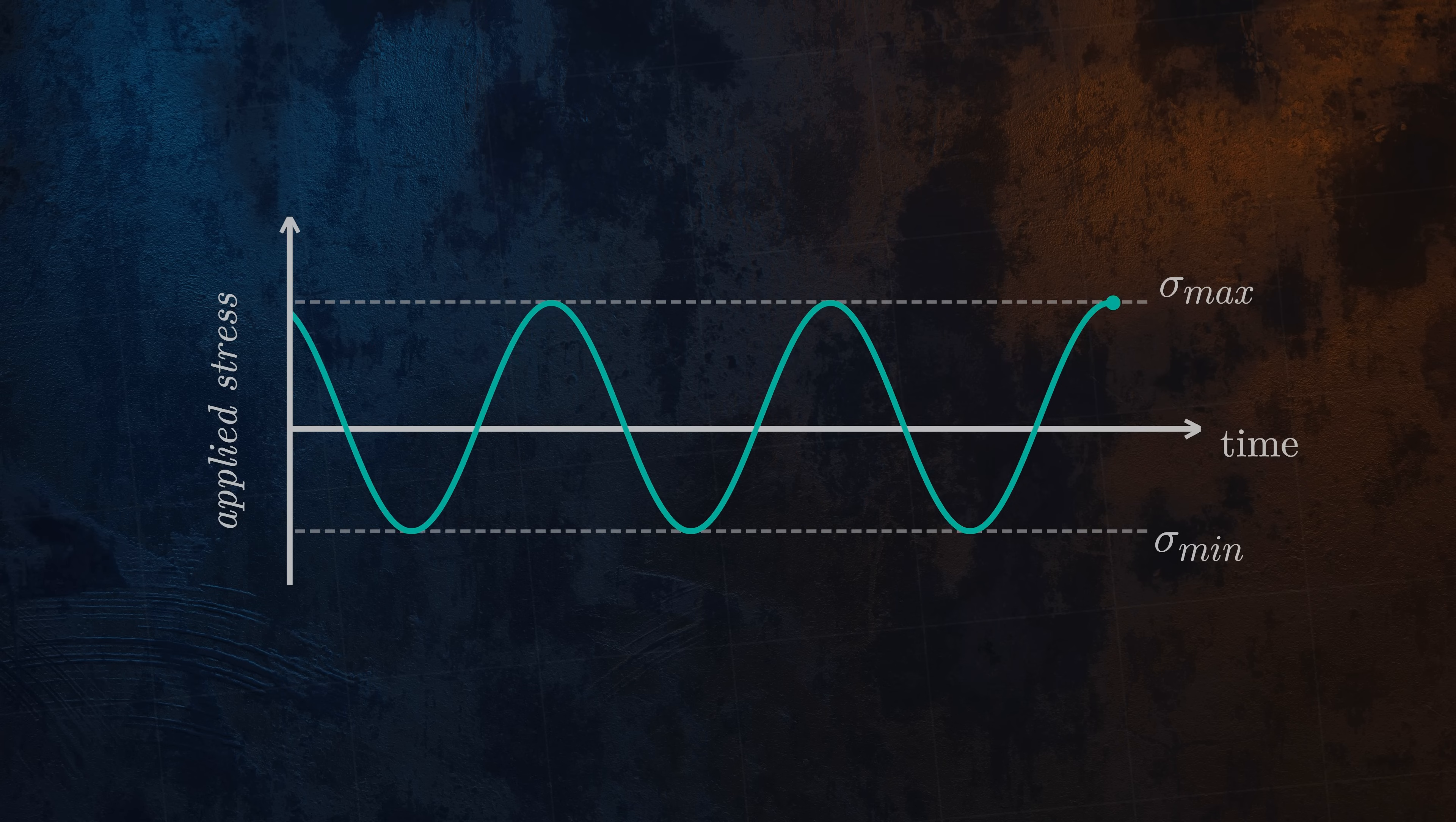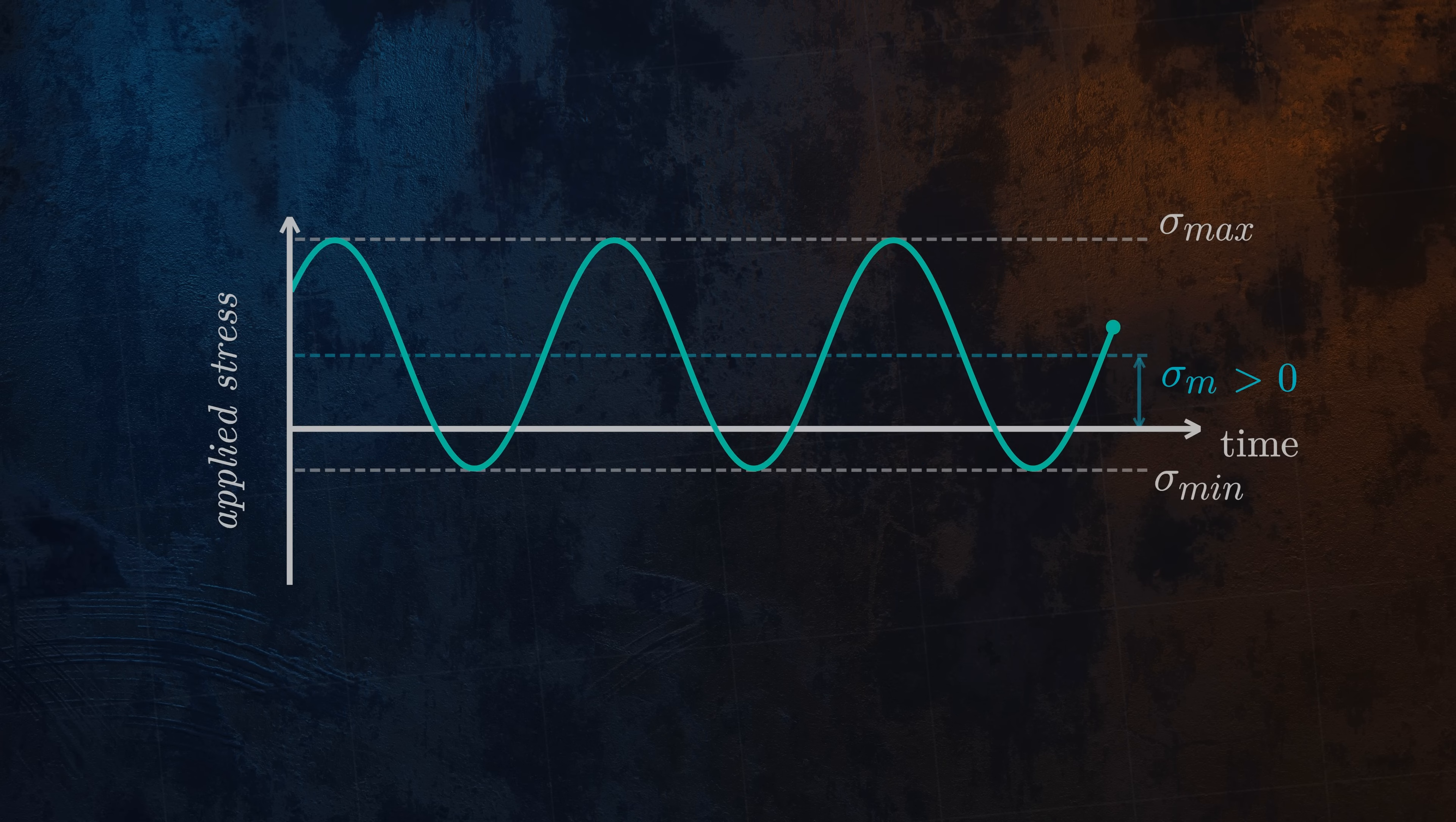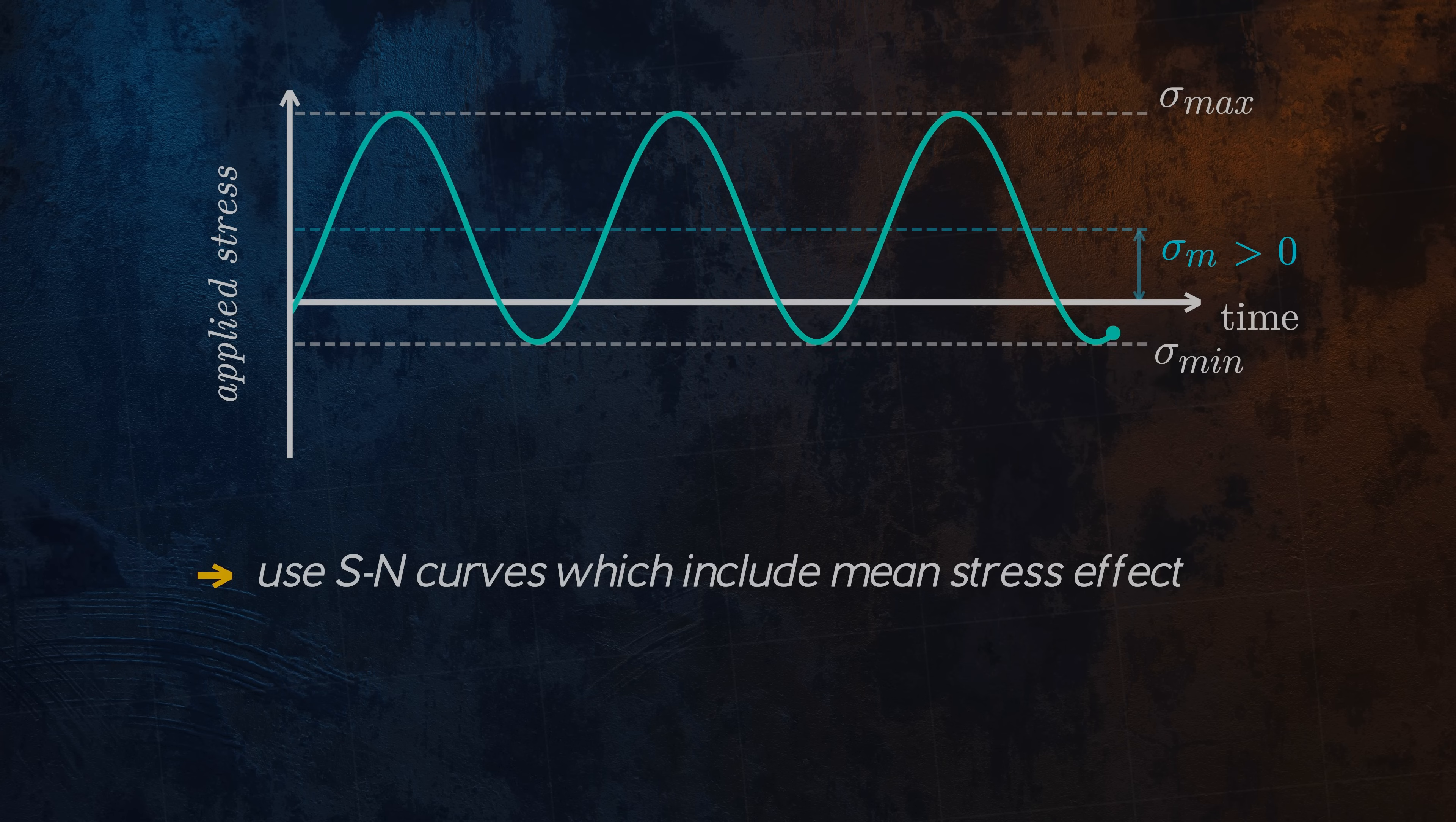In some cases, we might have a mean stress which is not equal to zero, as shown here. This mean stress will have an effect on the fatigue life. A tensile mean stress will typically result in a shorter fatigue life. One way to account for a tensile mean stress is to use S-N curves derived for specific values of mean stress, but these are often not available or would be time consuming to obtain.